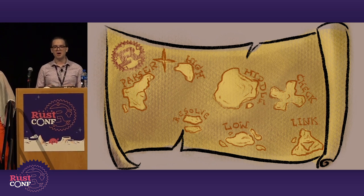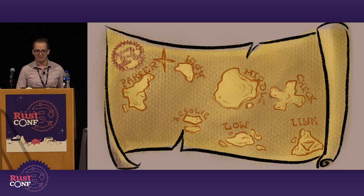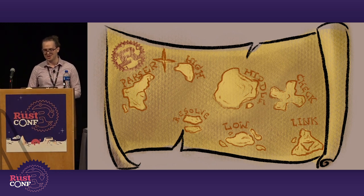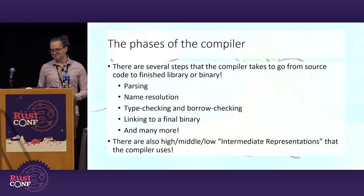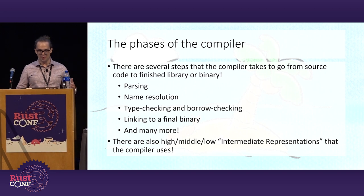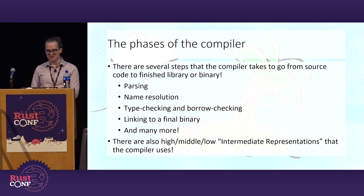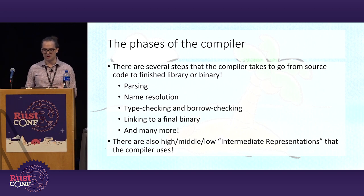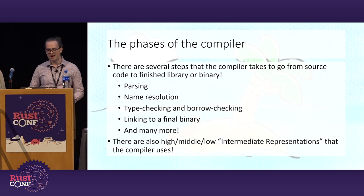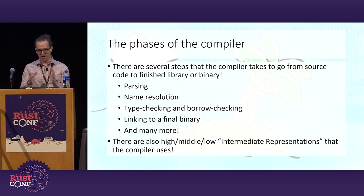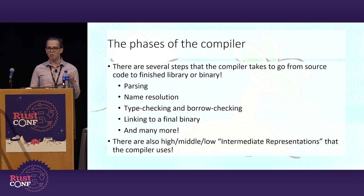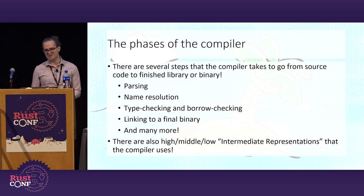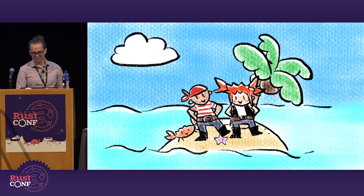From Parser Island in the far west, you can continue on to Resolve Island, HIR Island, Check Island, Middle and Low Islands, and finally Link Island. Each island has a special industry that contributes to its local culture. To take a step back from the story, this corresponds to the flow of the compiler — the parser, name resolver, type checker and borrow checker, intermediate representations (high, middle, and low), and then it links into the final binary. This is also why if you've gotten through all your compiler errors and are then hit with a bunch more, that's because you've reached the next phase — the next island, so to speak.